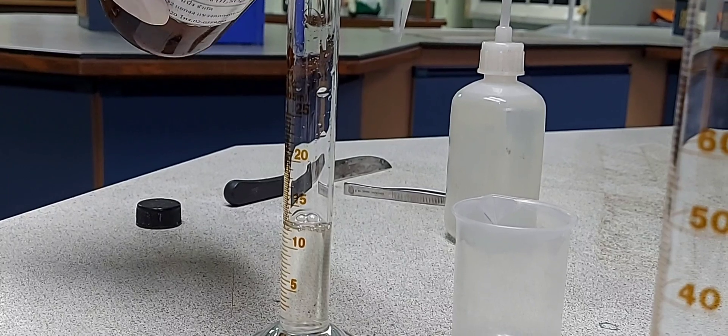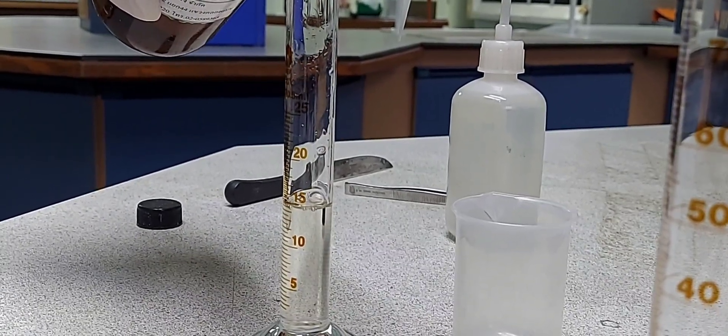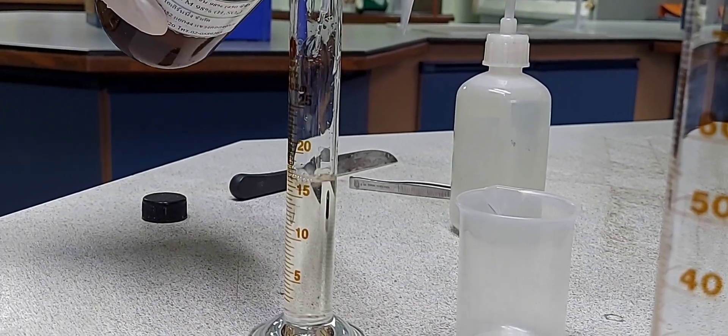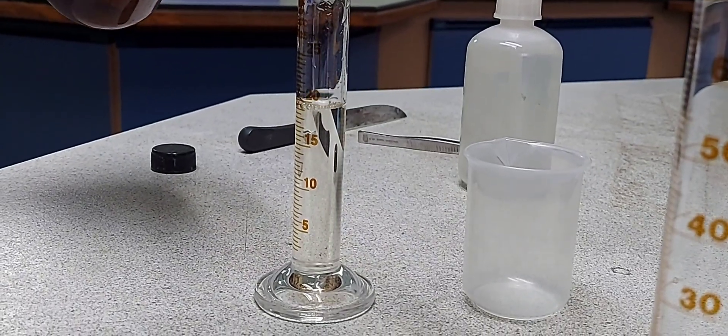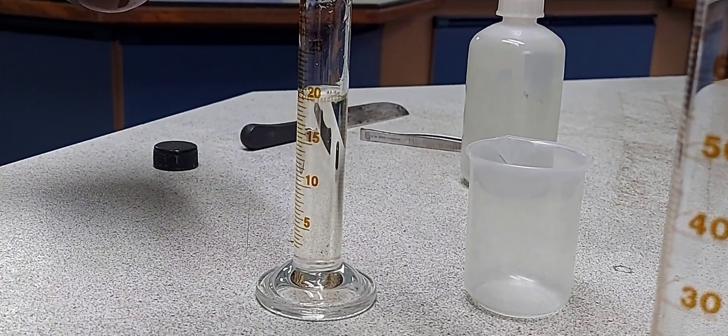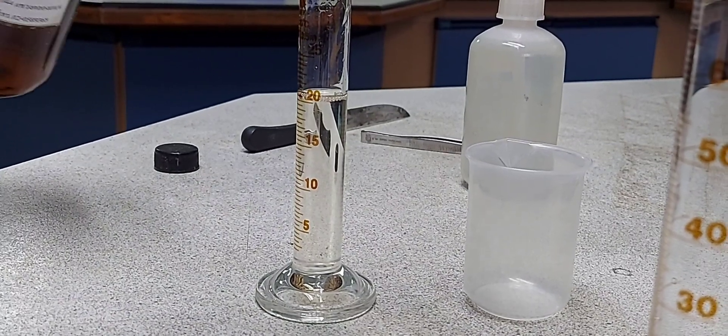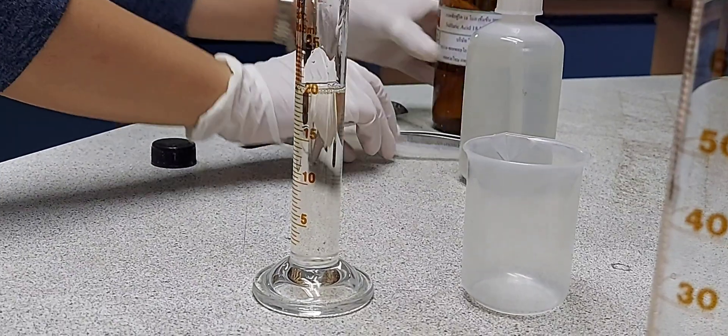So here, 18 molar concentrated sulfuric acid, I am taking 20.8 ml of that acid and the remaining 230 ml water because I am making a concentration of 1.5 molar in a 250 ml graduated flask.